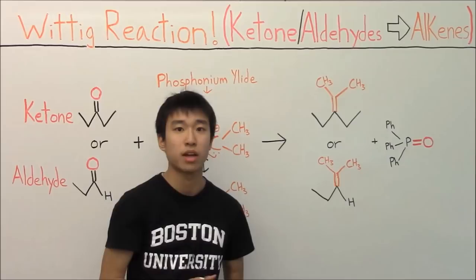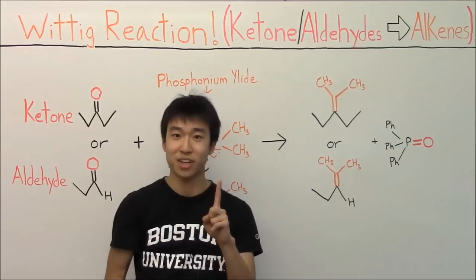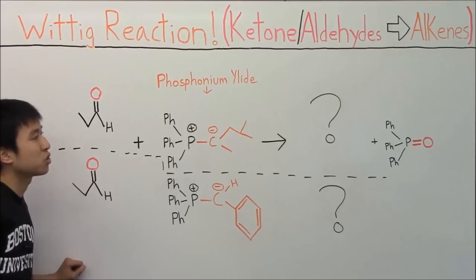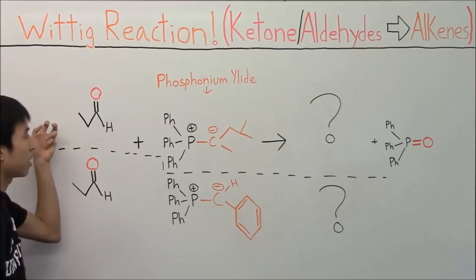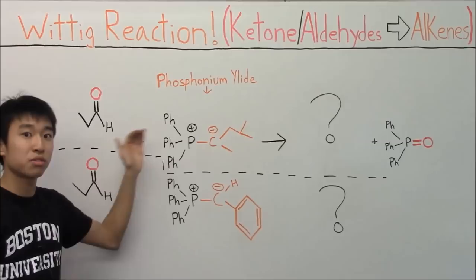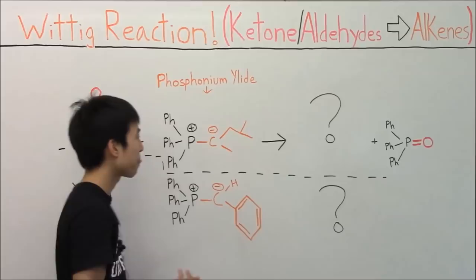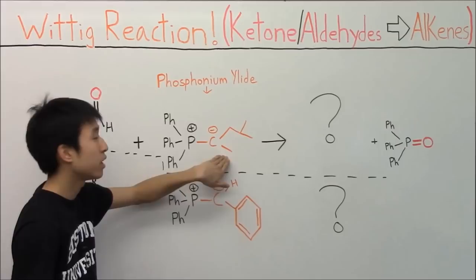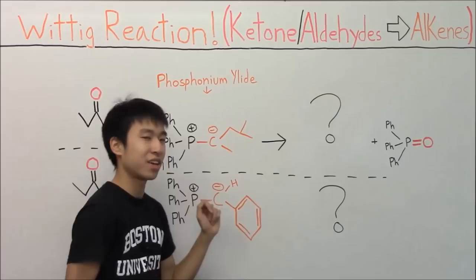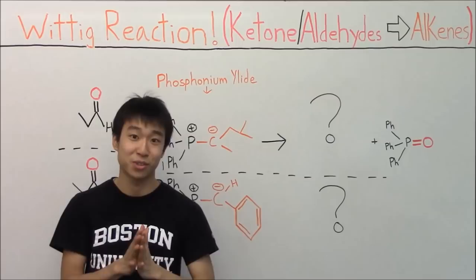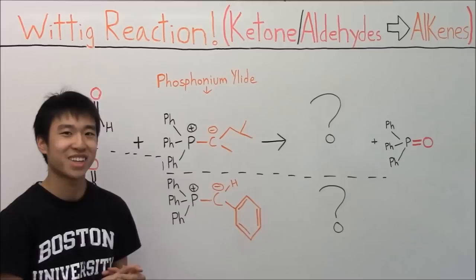Now if you want to see a harder example that includes some exceptions in the Wittig reaction, here we go. We start off with two aldehydes — they're exactly the same — and we're going to react them with different phosphonium ylids and see what products we get. Notice that this first ylid has a carbon chain on each side, while the second ylid has a benzene ring and a hydrogen. Benzene rings are really special in organic chemistry, so you may get two different products. Take a second, hit pause, and try this out.